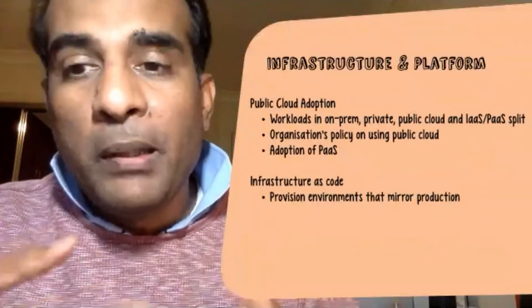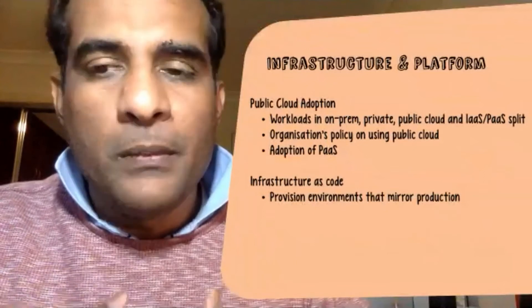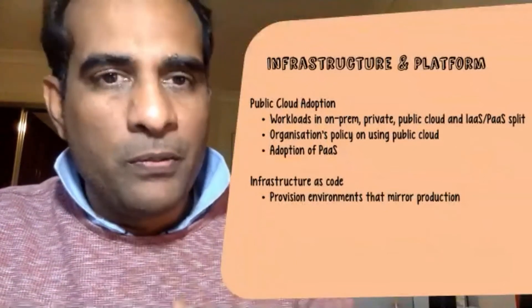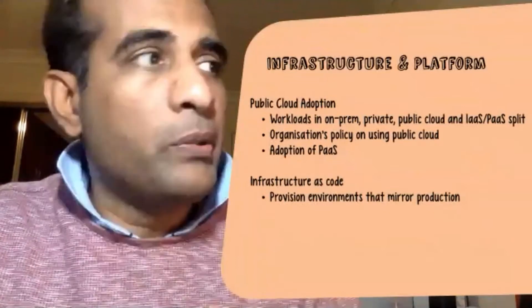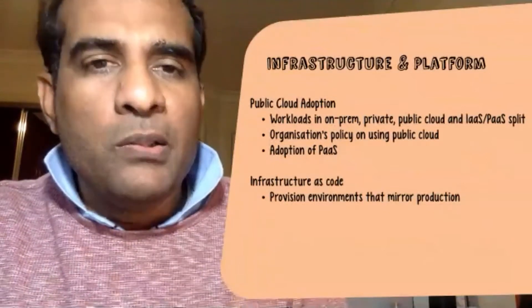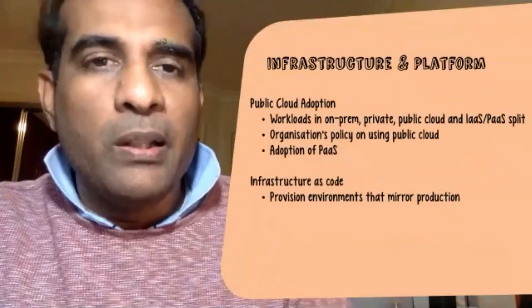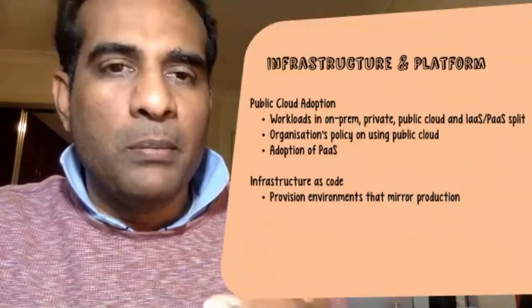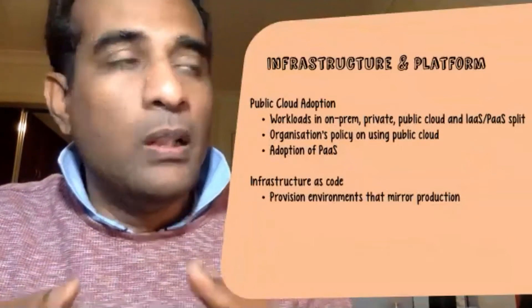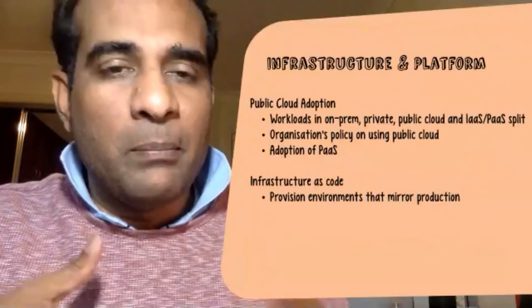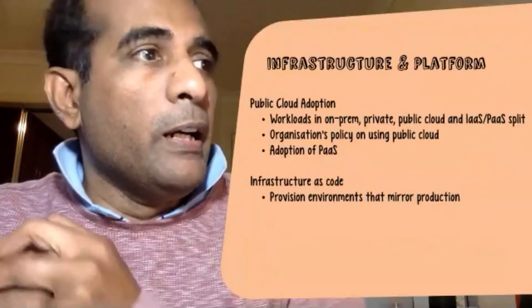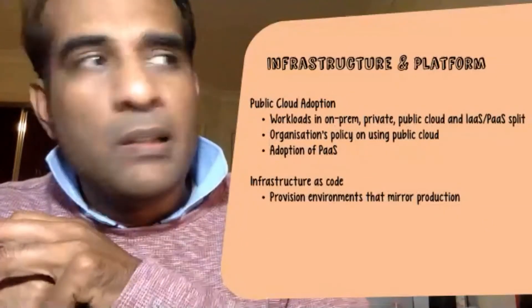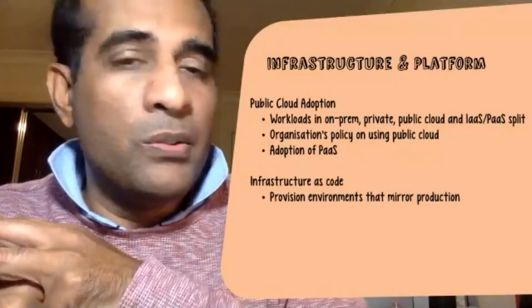The second capability is infrastructure and platform. The adoption of public cloud particularly is an important part of improving your overall metric. It depends on how much of your workload is running on-prem, how much is running on private cloud, how much isn't running on public cloud, and what is the split between IaaS and PaaS. One of the more important things is what's the organization's policy on using public cloud.